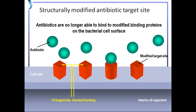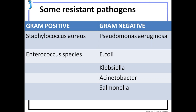To summarize the organisms that commonly develop resistance: gram-positive organisms include Staphylococcus aureus and Enterococcus species; gram-negative organisms include Pseudomonas aeruginosa, Escherichia coli, Klebsiella species, Acinetobacter, and Salmonella.